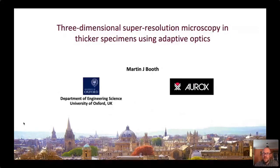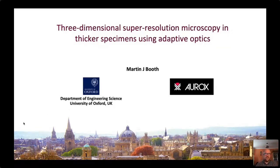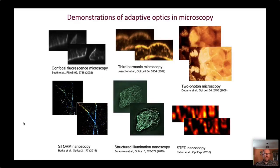Thank you for your patience. I'll be talking about using adaptive optics to enable us to go deeper in three-dimensional imaging, particularly in super-resolution microscopy. Over many years, we've been working on developing adaptive optics for a whole range of microscopes, including conventional resolution microscopes such as the three examples shown at the top, and super-resolution microscopes shown at the bottom.